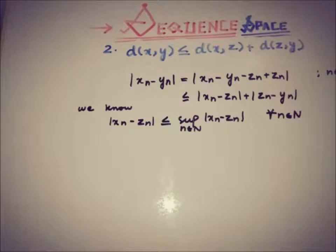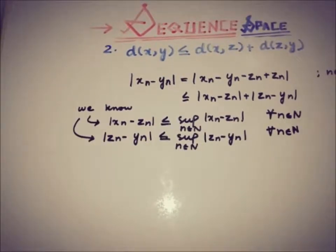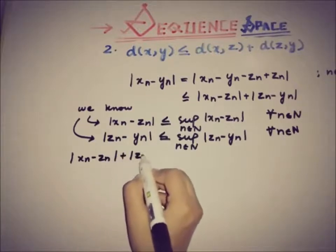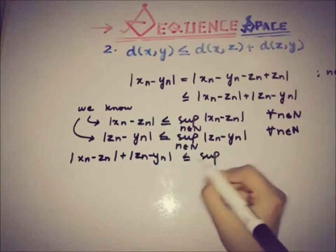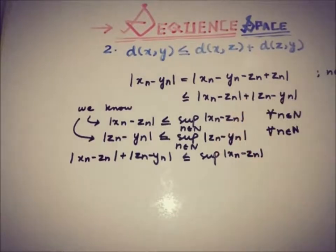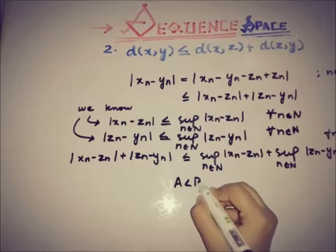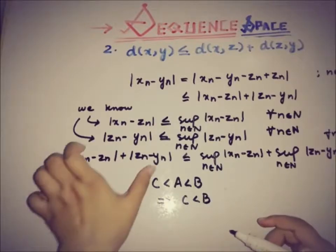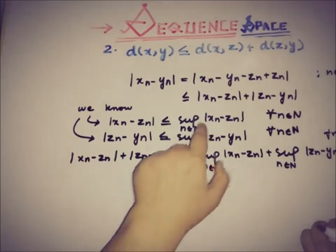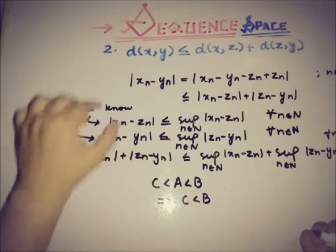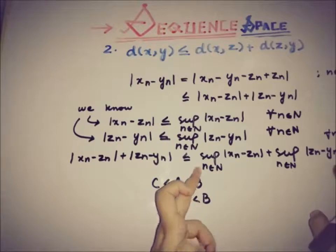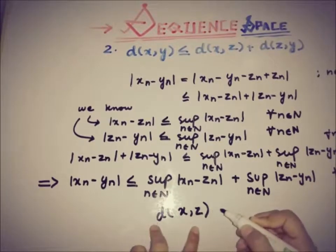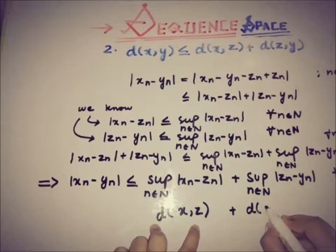This is also true for the sequence z_n minus y_n. So if we add both terms, the other side of the inequality combines both bounds. We use the relation: if a is less than b and a is greater than c, then c is less than b. Here we apply this so that |x_n minus y_n| is bounded by the supremum of |x_n minus z_n| plus the supremum of |z_n minus y_n|, which are d(x,z) and d(z,y) respectively.